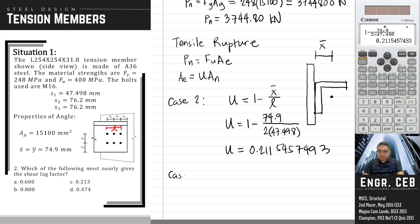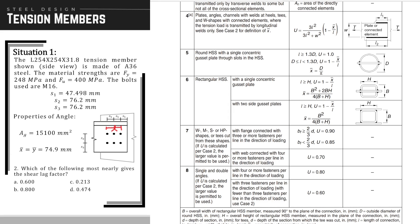From case 8, our shear lag factor is U equals 0.6. Between these two, we will choose only one shear lag factor. What is our clue in order to choose the shear lag factor to be used? Let us read the description of case 8: single and double angles. If U is calculated per case 2, the larger value is permitted to be used. In getting the shear lag factor, we can use case 2 and case 8, but in deciding what shear lag factor to be used, it is permitted by the code to use the larger value. In this case, we will use the larger value, which is 0.6.